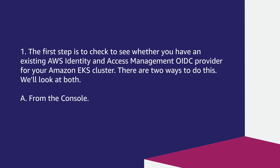Let's get started. The first step is to check whether you have an existing AWS Identity and Access Management OIDC provider for your Amazon EKS cluster. There are two ways to do this — we'll look at both. The first way is from the console.